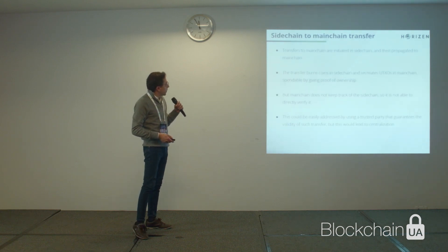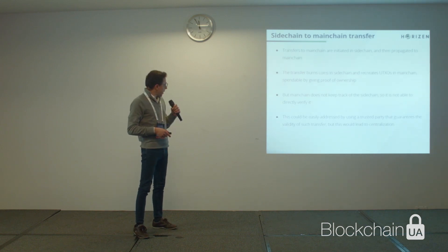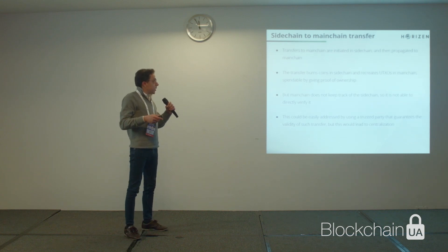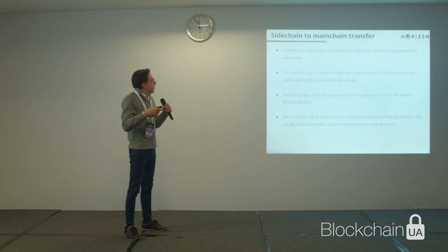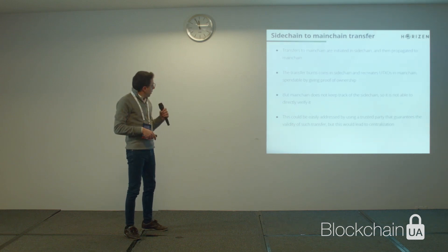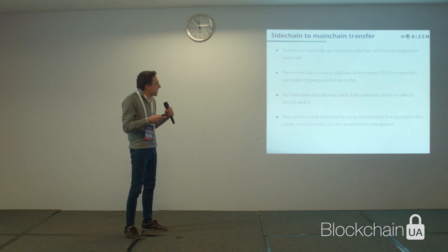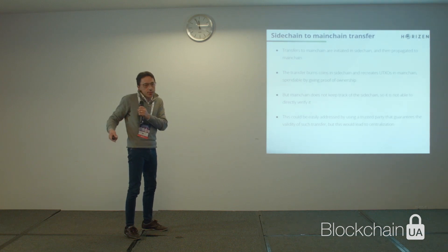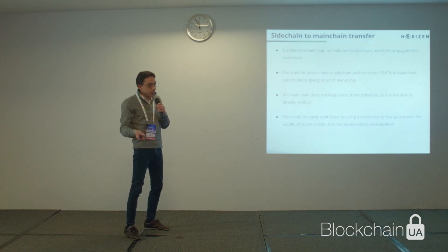Now let's look at the other transfer — sidechain to main chain — which is the most complicated. Transfers to main chain are initiated in the sidechain and then propagated to the main chain. This means there is a transaction created in the sidechain that is somehow propagated to the main chain. This transfer burns coins in the sidechain and recreates the UTXO in the main chain, so you have the coins back there, spendable like any other UTXO.